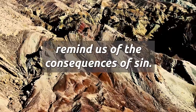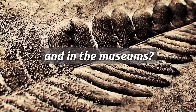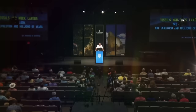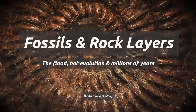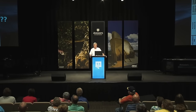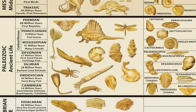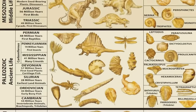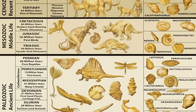The rocks and fossils remind us of the consequences of sin. Can we trust what we see in the textbooks and in the museums? What is fact and what is fiction? What I want to talk about this afternoon is fossils and rock layers — the flood, not evolution and millions of years. We get presented in the museums and textbooks this diagram on the screen, and many people are confused.